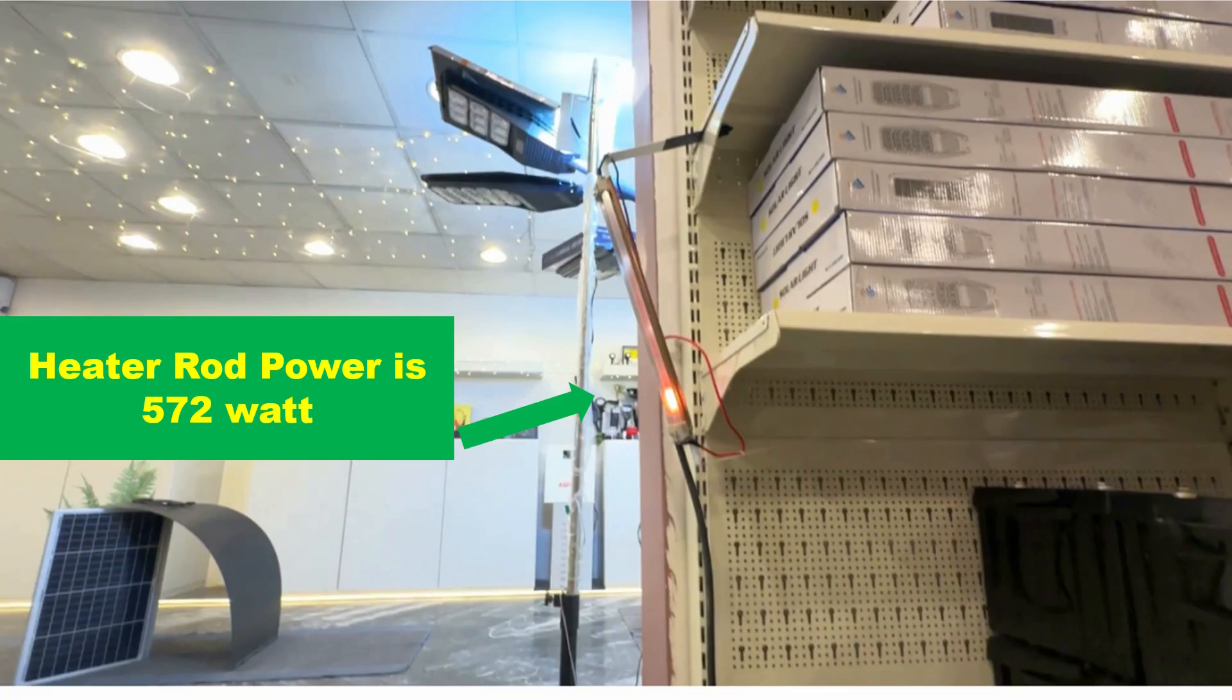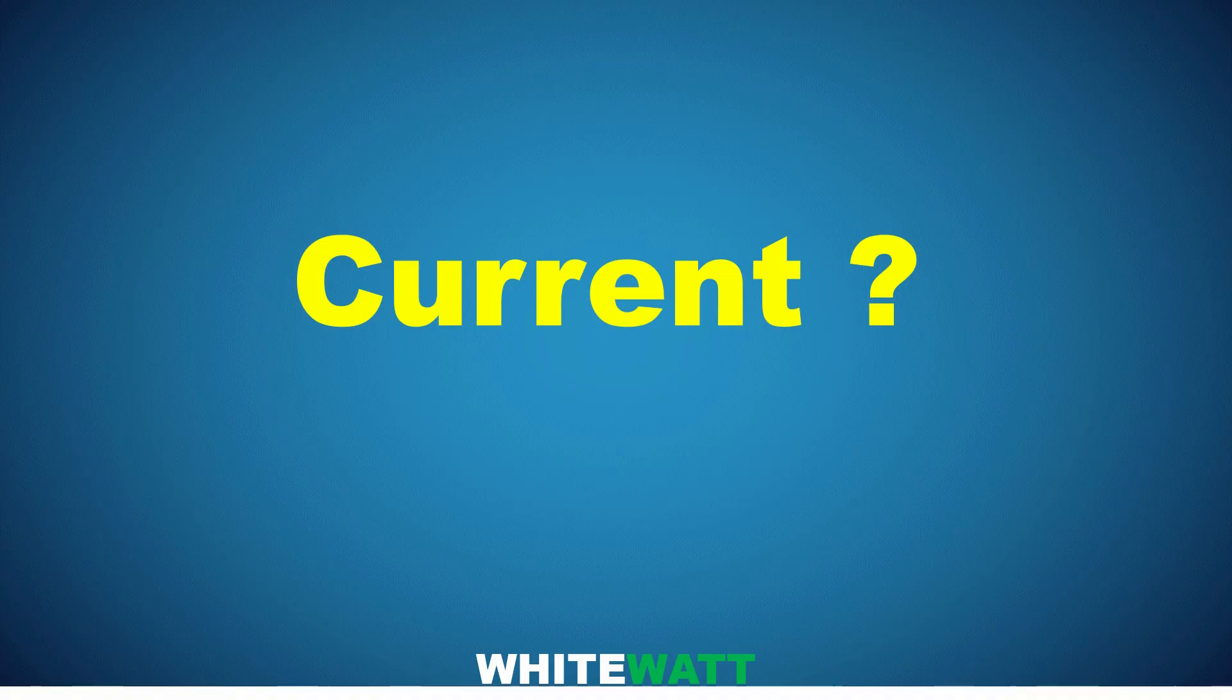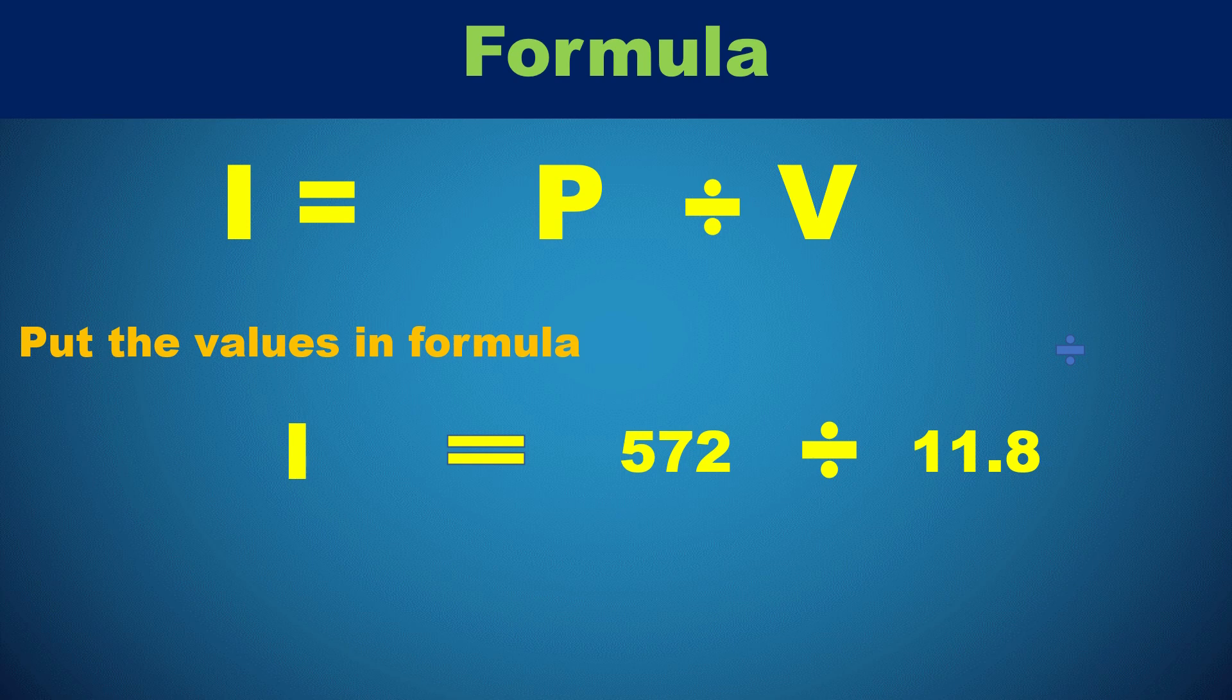For example, we have a heater rod with a power of 572 watts. The battery voltage is 11.8 volts. The required current to deliver 572 watts will be I = P ÷ V. So putting the values in the formula: 572 ÷ 11.8, the answer becomes 48.5 amperes.